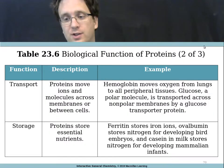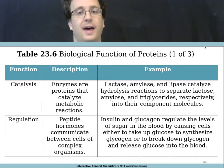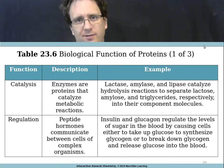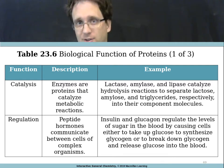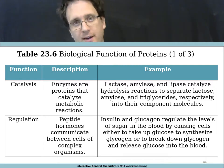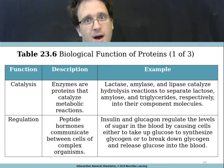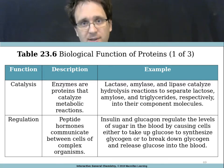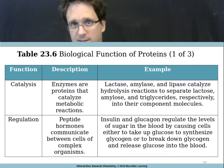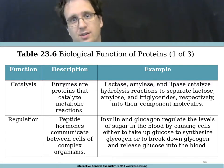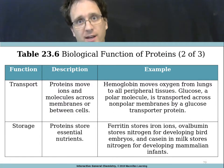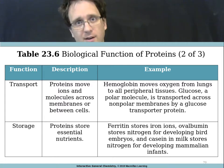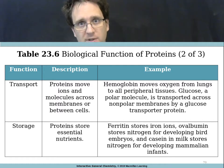Chapter 23, section 4 is on proteins — perhaps the most diverse and complex of our classes of biomolecules. Table 23.6 lists all the different functions that proteins can serve. They catalyze various metabolic reactions; proteins that catalyze reactions are called enzymes. They regulate other cellular processes, so there are some hormones which are proteins in addition to the hormones which are lipids. They transport ions and small molecules and other things the body needs in its biochemical processes.